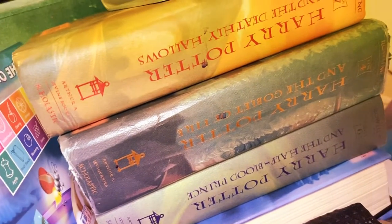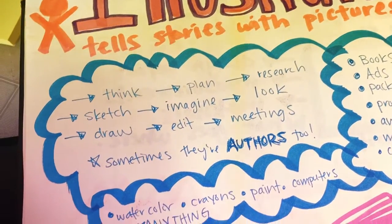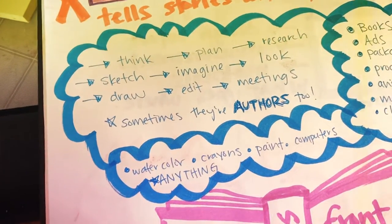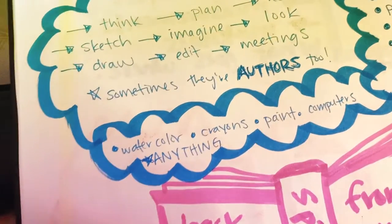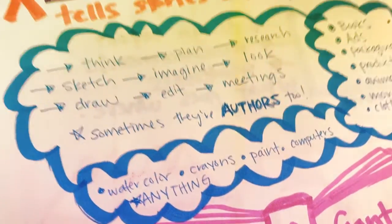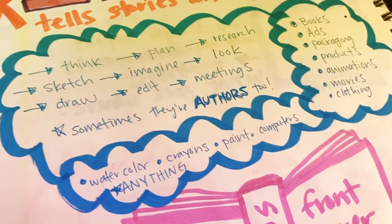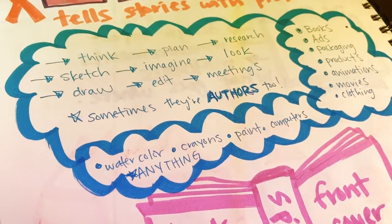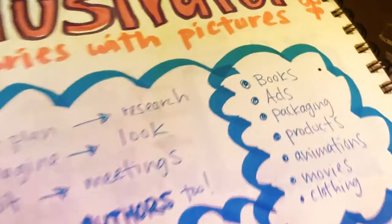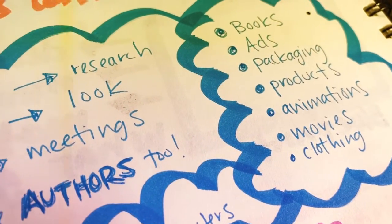You've probably heard that an author writes the stories and the illustrator draws the pictures, but that's not all illustrators do. An illustrator tells stories with pictures — they think, plan, research, sketch, and imagine. Then they go to meetings with the author and the company, and they get edits, meaning they're not done after the first drawing. They use all kinds of materials: watercolors, crayons, screen printing, printmaking, computers, markers — really anything you can use to create art.